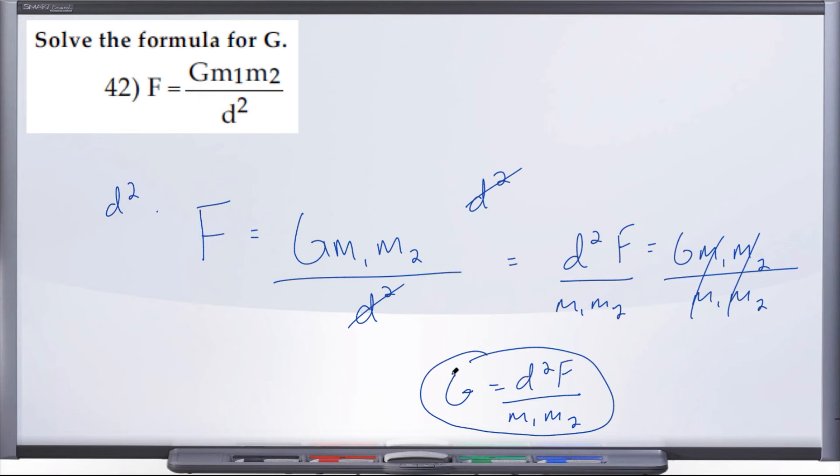It may say G equals F times d squared. That's fine too. Remember, you're multiplying, so it doesn't necessarily matter in what order we multiply. 3 times 5 is 15, just like 5 times 3 is 15. So you'll arrive at the same answer either way. But there you have it, number 42.